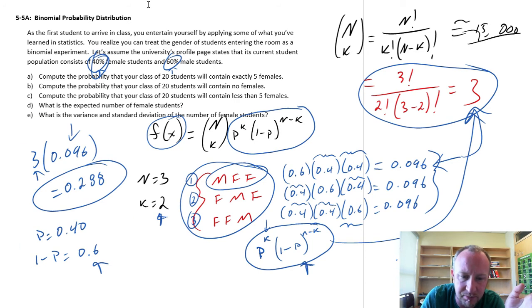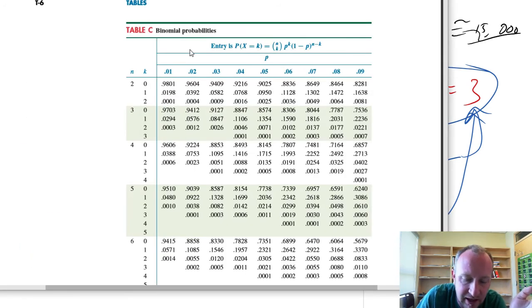For example, here I can pull up my binomial tables. And I can see, okay, I was looking at three trials, three students entering the room. I wanted to identify what's the probability that at least two of them will be female. So here's k is equal to 2.